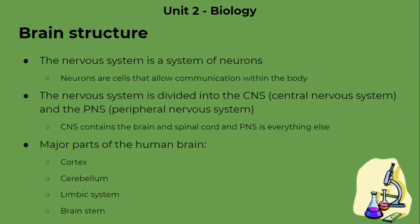To begin with, we are going to introduce brain structure. All of these subtopics are within the nervous system. The nervous system is our body's main system of communication — a system of neurons, which are nerve cells that interconnect our body. The nervous system is divided into the CNS, which is the central nervous system, and the PNS, which is the peripheral nervous system. The CNS is like the control center and it contains the brain and spinal cord. The PNS is everything else, which includes the sensory and motor neurons.